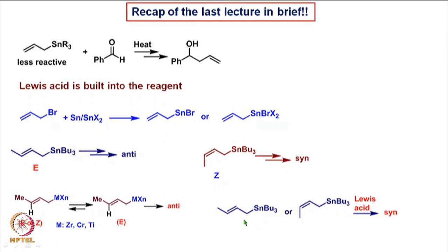Also, we saw that crotyl tin compounds, whether E or Z, if reacted with a carbonyl compound in the presence of a Lewis acid, give the syn product as a major product irrespective of the geometry of the crotyl compound. So this is how we saw a variety of reactions of allyl and crotyl tin compounds and crotyl compounds containing other metals like zirconium, chromium, and titanium.